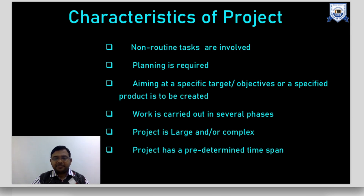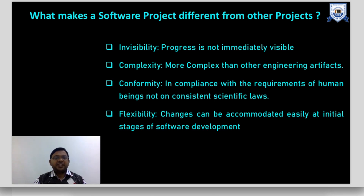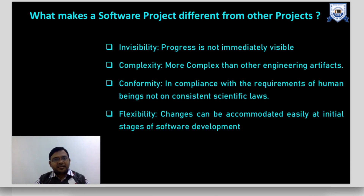What makes a software project different from other projects? First is invisibility — progress is not immediately visible. For example, in a bridge project we can see that part of the structure has been built, but in software, during requirement analysis or design phases, we cannot see any intermediate product being developed. Progress cannot be immediately visible at these phases.